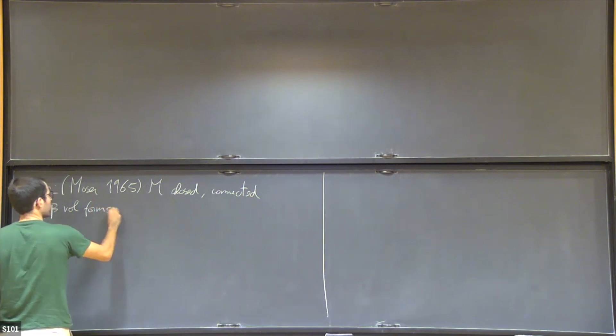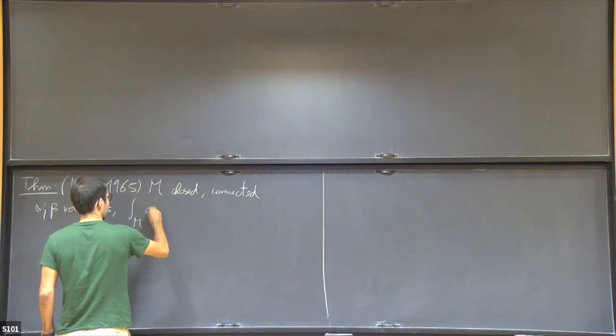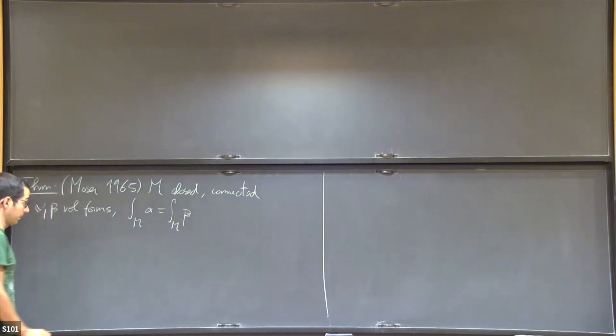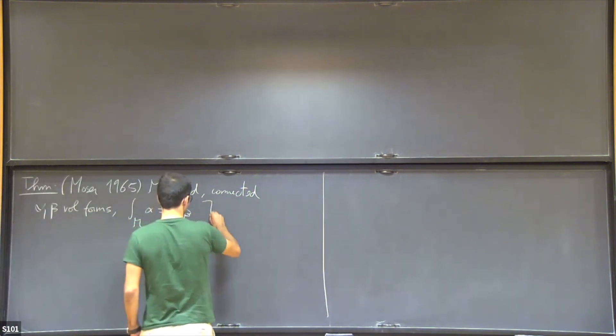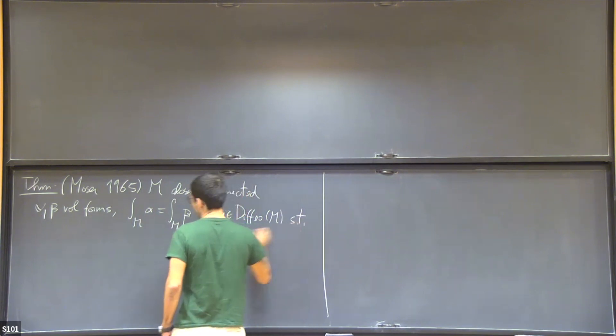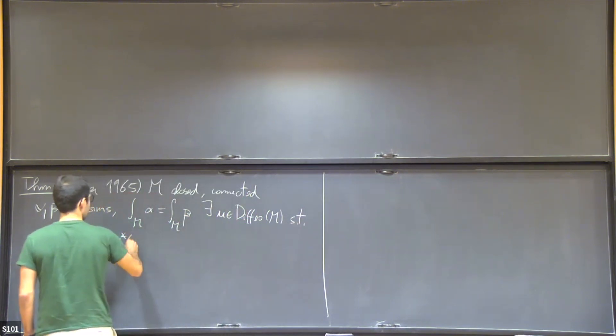These volume forms should have the same volume. So when you integrate alpha and beta over M, you get the same number. Then what Moser showed was that there is a diffeomorphism U such that the pullback of beta through U is alpha.